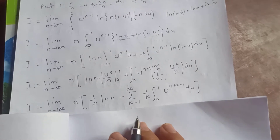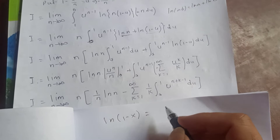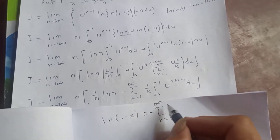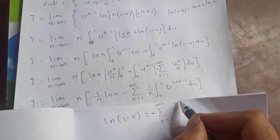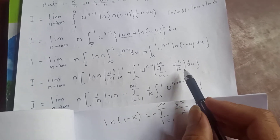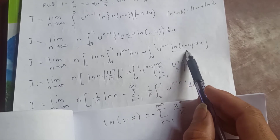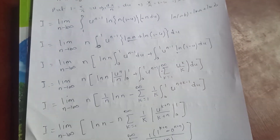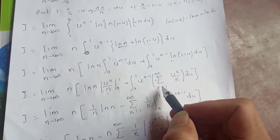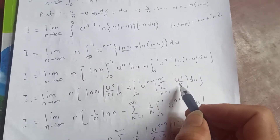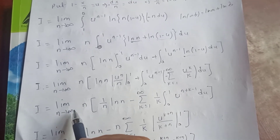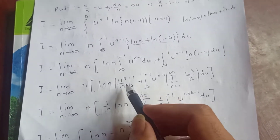For the second integral, we use the Taylor series expansion: log(1-u) = -∑_{k=1}^∞ u^k / k. Substituting this into the integral gives ∫₀¹ u^(n-1) log(1-u) du = -∑_{k=1}^∞ (1/k) ∫₀¹ u^(n+k-1) du.